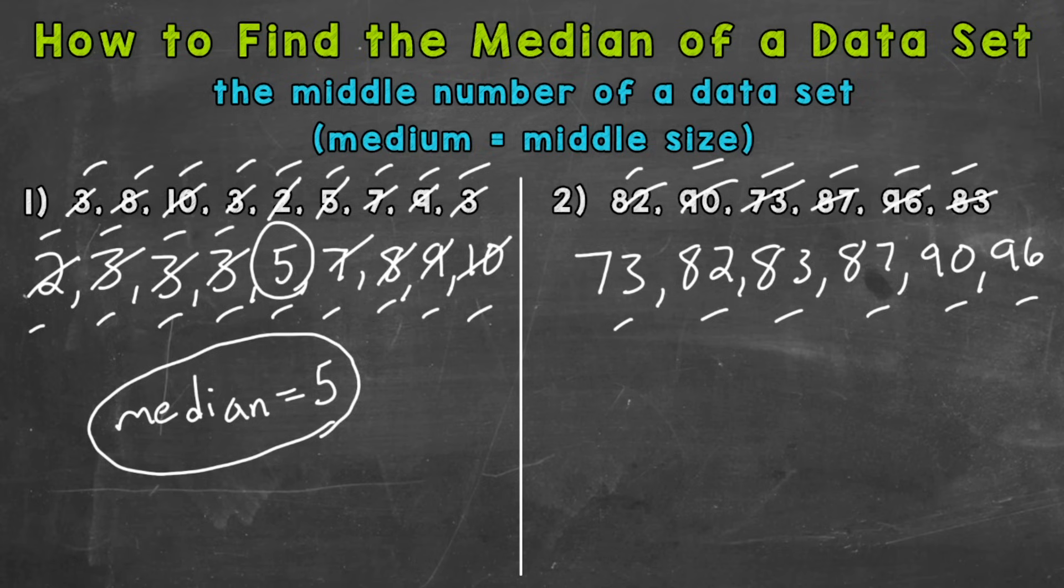Well, here we have an even number of numbers in our data set. So we do not have one number directly in the middle. It's going to be our middle would be right here between 83 and 87. So what you do if you have an even number of numbers in your data set, we find the two numbers directly in the middle, which is going to be 83 and 87 here.